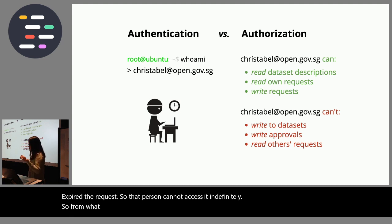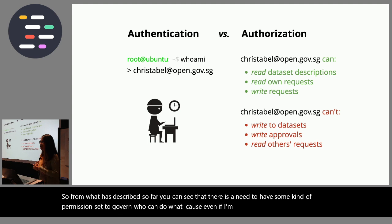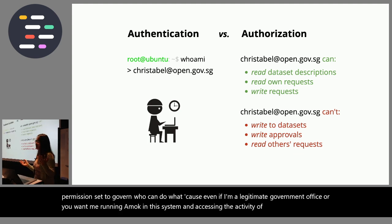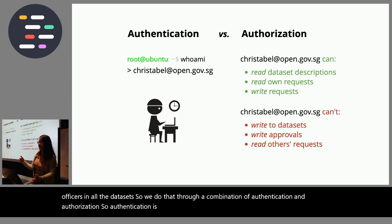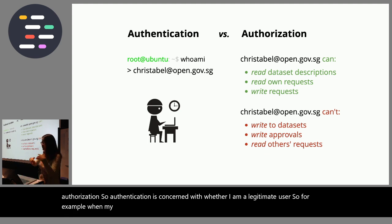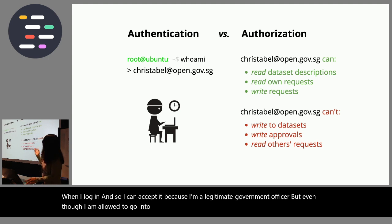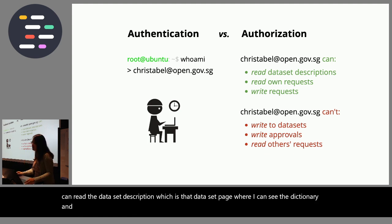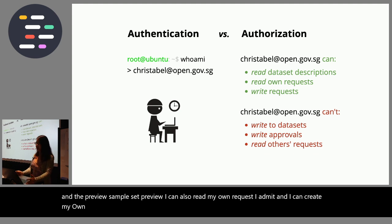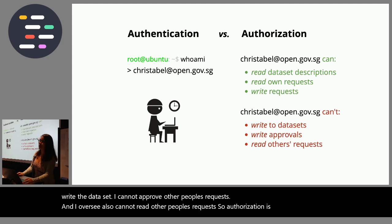From what I've described, there's clearly a need for permissions to govern who can do what. Even a legitimate government officer shouldn't be able to run amok and access all activity and data sets. We handle this through a combination of authentication and authorization. Authentication is about whether I'm a legitimate user — for example, christabel@open.gov.sg. Authorization restricts what I can do: I can read data set descriptions and my own requests, and create requests, but I cannot write data sets, approve others' requests, or read other people's requests.